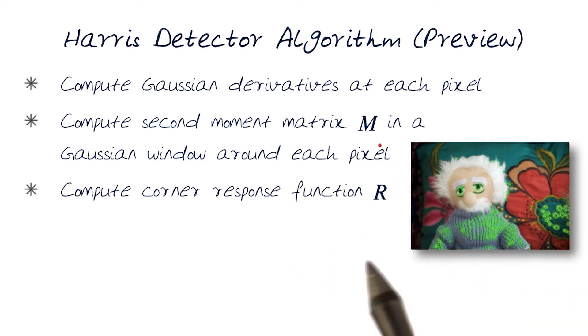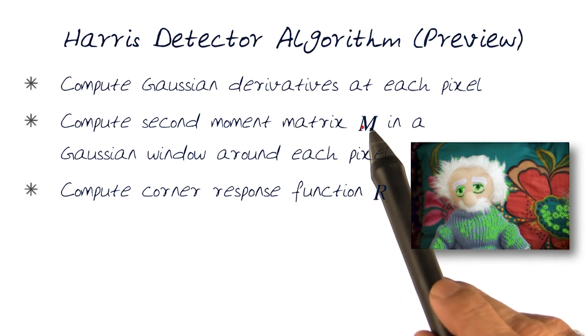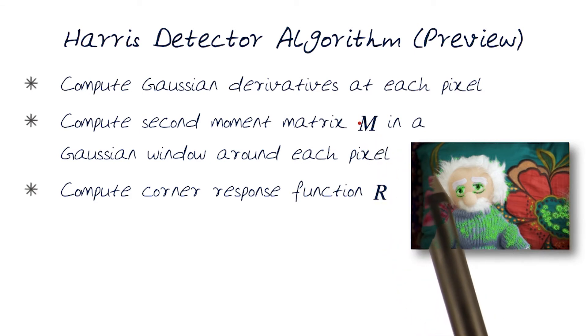Then using that, remember how we can actually take R, or compute R from M. By looking at its trace and its determinant, we can compute R.